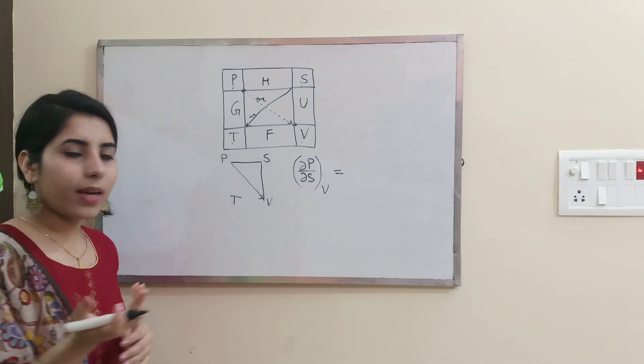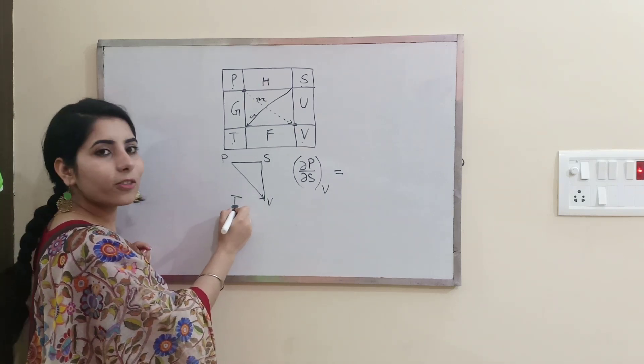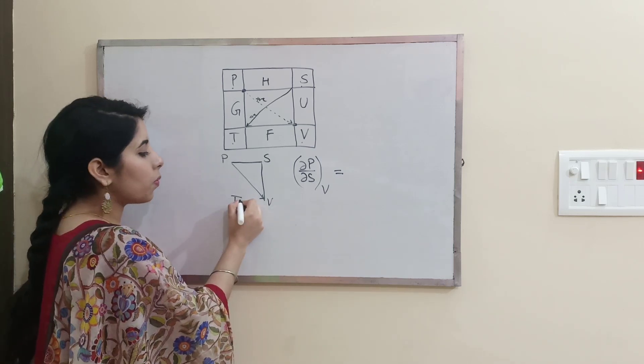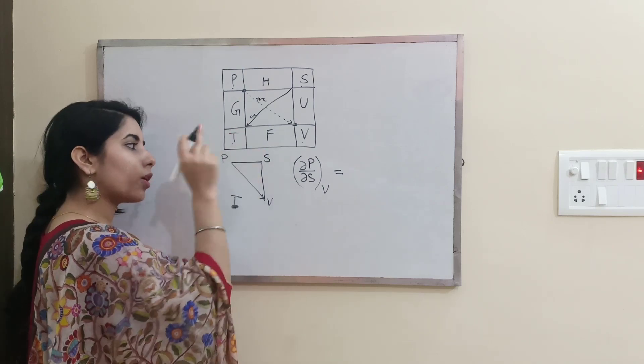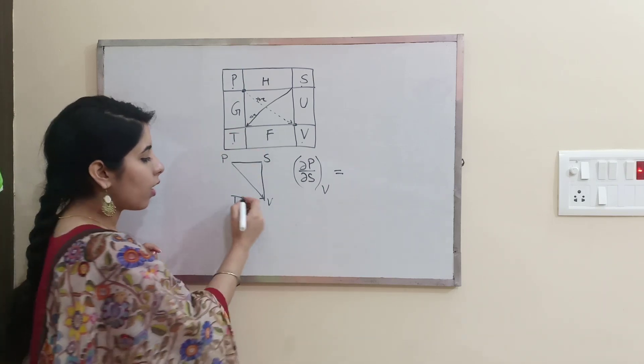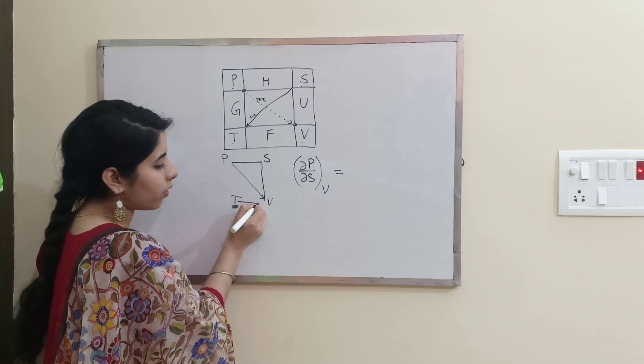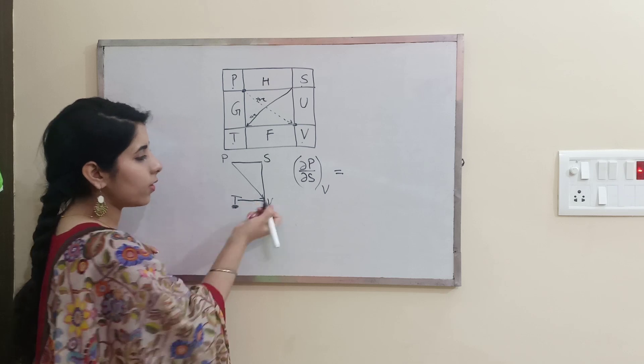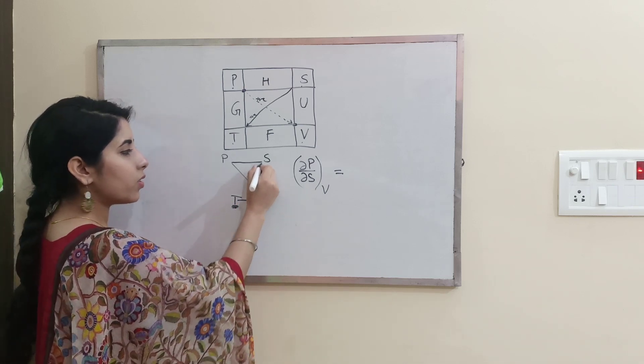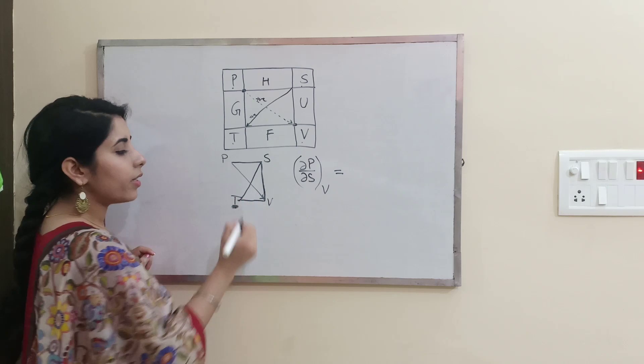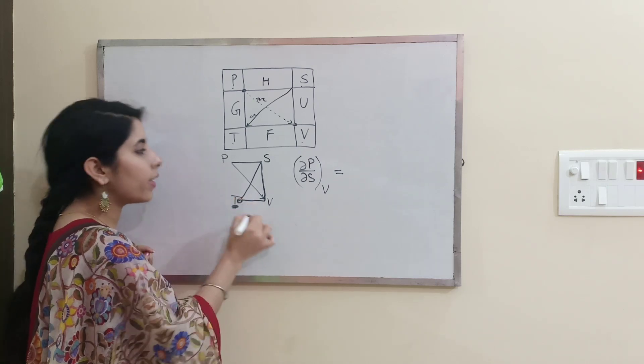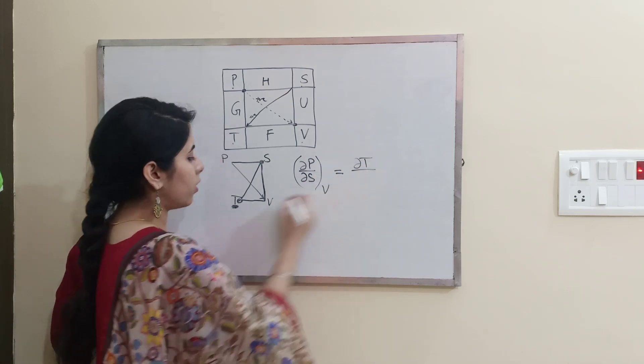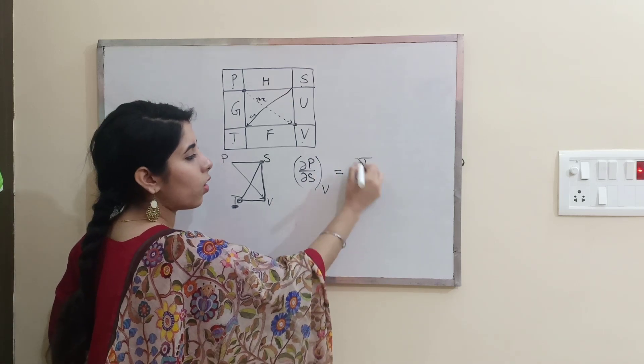You go back in the direction where you earlier traced that triangle. Go back like this, then in this direction. We have started from T and V and we are ending at S, so it's going to be del T over del V at constant entropy.